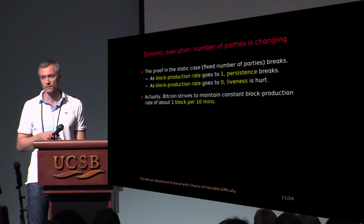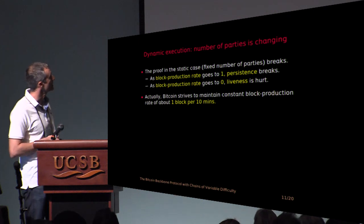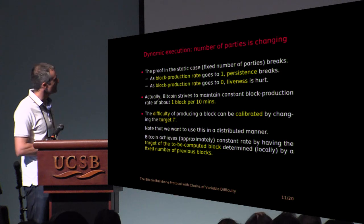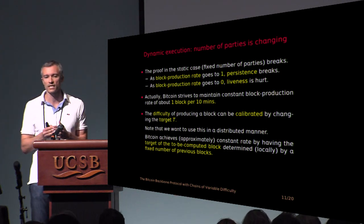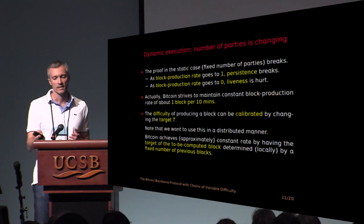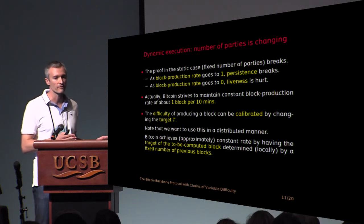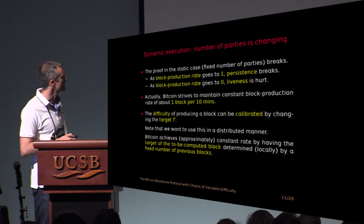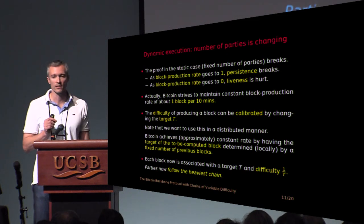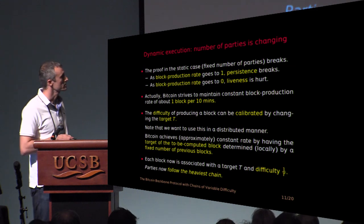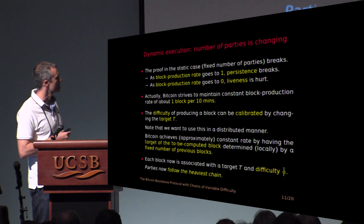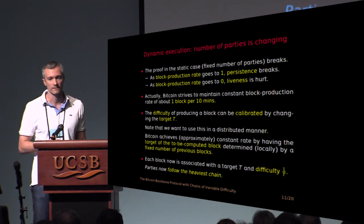And in reality, Bitcoin strives to maintain a constant block production rate, about one block per 10 minutes. And the way it does that is exactly by adjusting the target t. And if you think about it, you'll realize that you want to do this in a distributed manner. So what can you do? A natural thing that comes in mind is to set the target of the next block by looking at how fast your previous blocks were computed. We'll see details about that later. For the moment, note that in this setting, now with each block we associate a weight, a difficulty, which is 1 over t. So the harder to compute the block, the higher the difficulty it is, the higher its weight in the chain. And now parties follow the heaviest chain, instead of just the longest one.